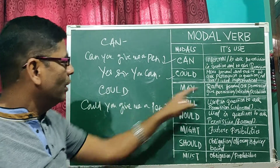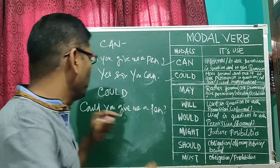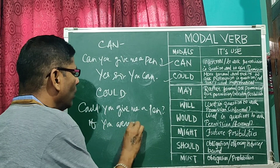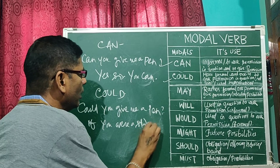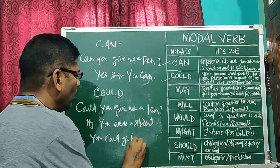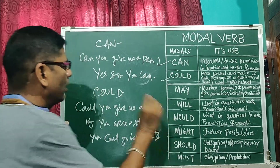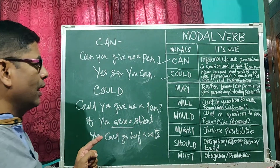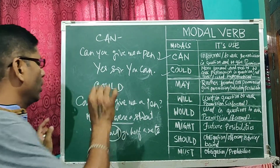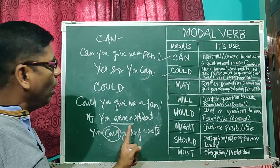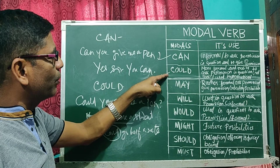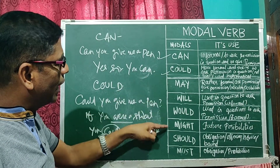Another use of could is for hypothetical situations. For example: if you were a student, you could go halfway. If you were a student — this is a hypothetical situation. At the time of a hypothetical sentence, you can use could. Now, we have already discussed can and could. Now it is time to discuss may and might.